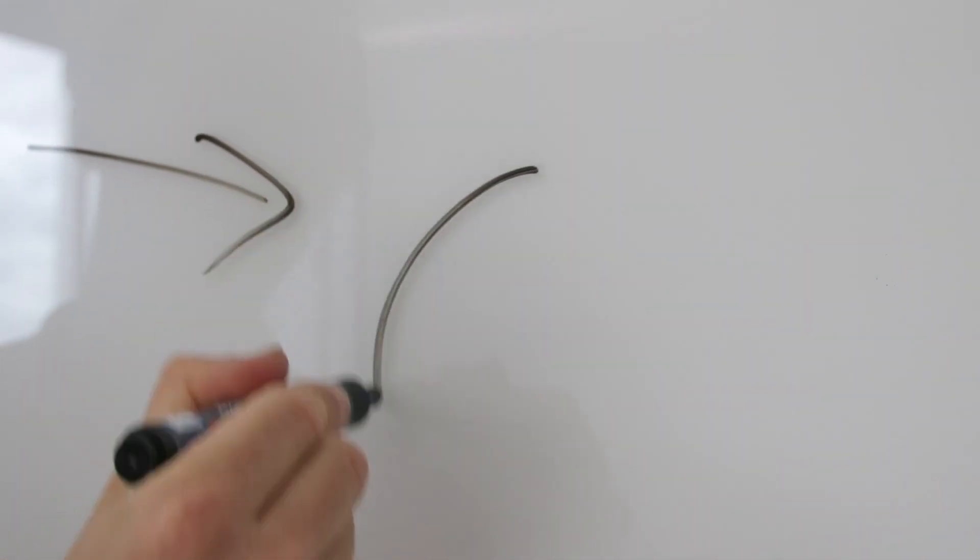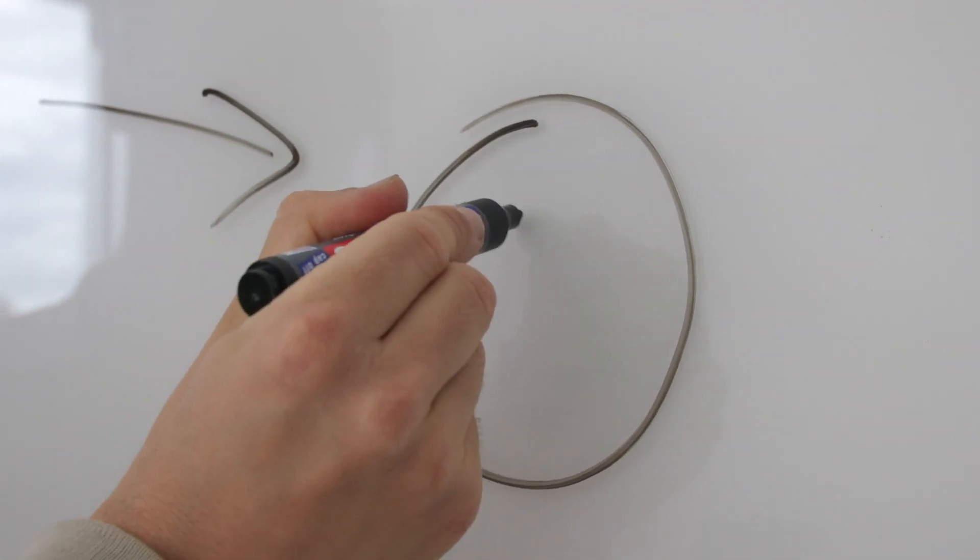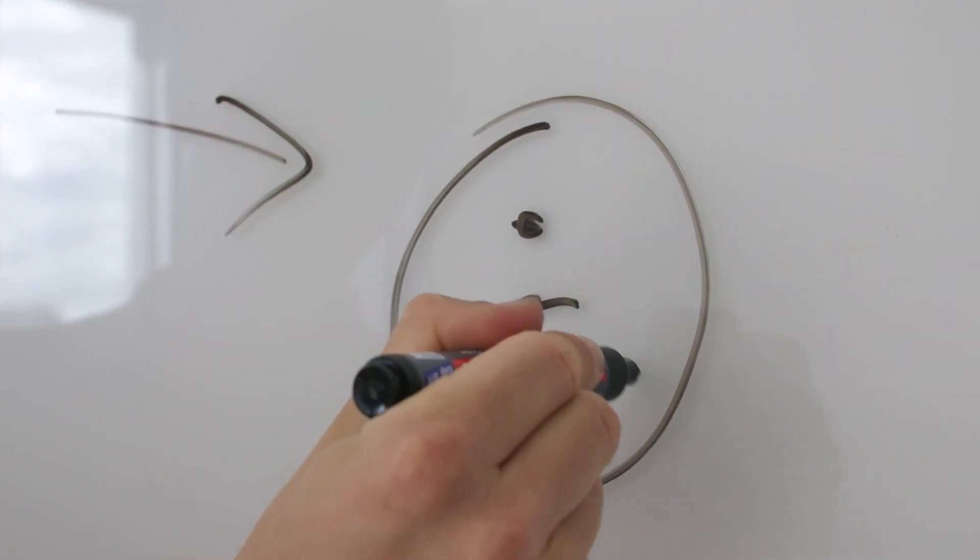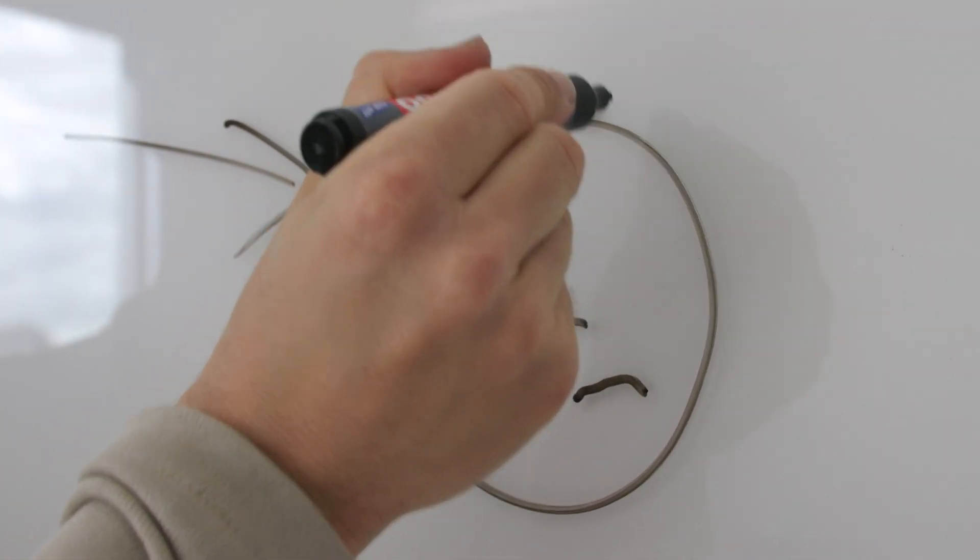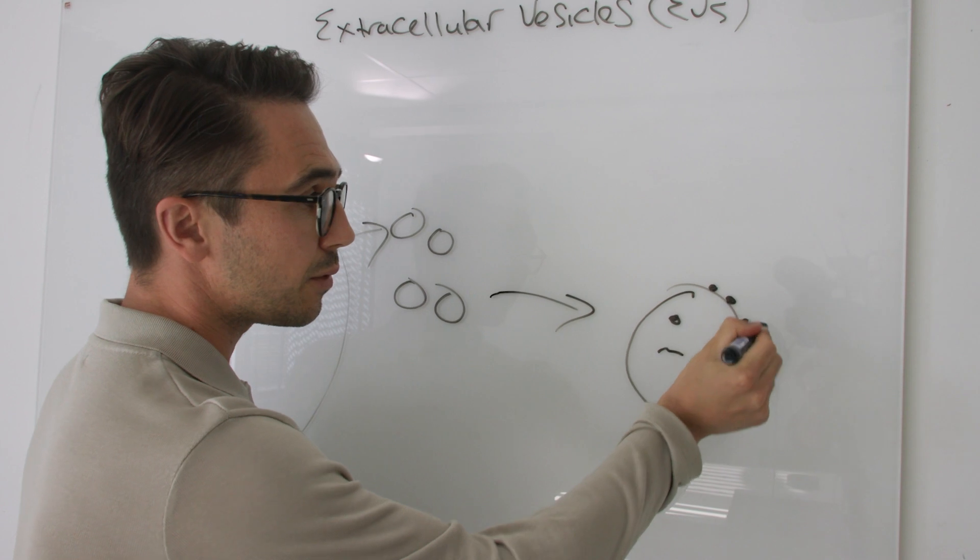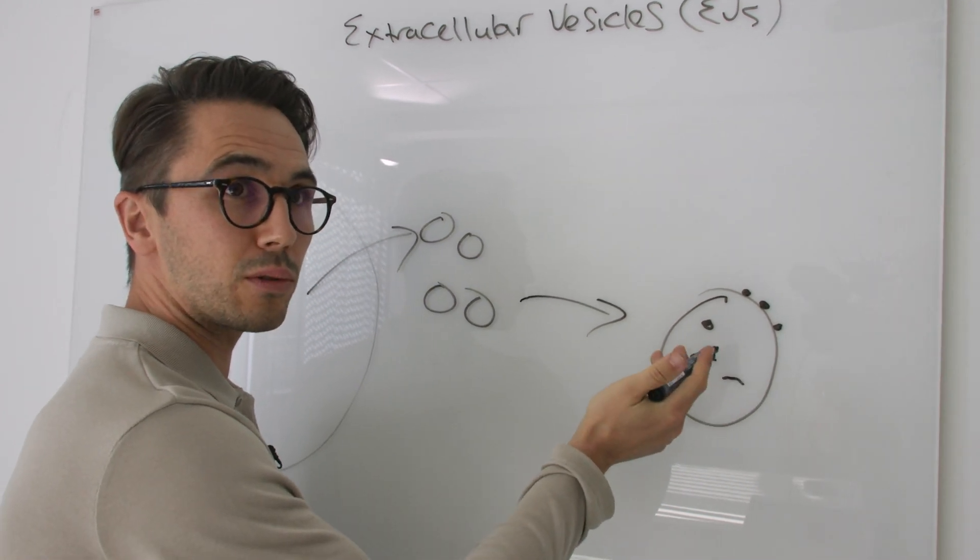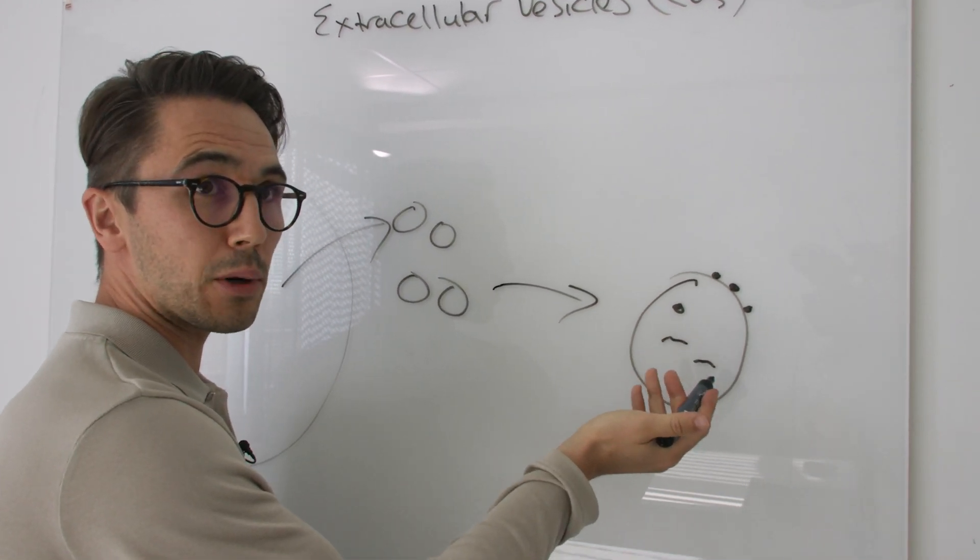EVs contain biological cargoes such as proteins and RNAs. They're also decorated with surface molecules which define the precise biological destination, much like a postcode.